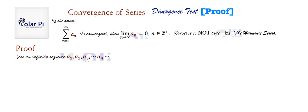For an infinite sequence a_1, a_2, a_3, ... a_n, ..., s_n is called the nth partial sum. So s_n would be like if we added a_1, a_2, a_3, all the way to a_n.